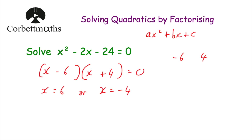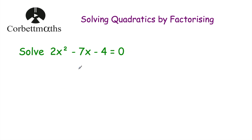Let's have a look at our next question. We've been asked to solve 2x² - 7x - 4 = 0. Again we've got a quadratic on the left-hand side equal to 0, which is fantastic. So we're going to try to factorize the left-hand side of this equation.